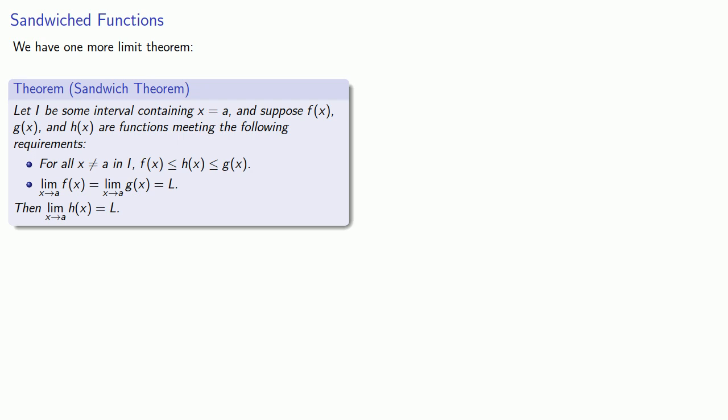Furthermore, suppose that the limit as x approaches a of f(x) is equal to the limit as x approaches a of g(x), and they're both equal to the same value L. Then, the sandwich theorem says that the limit as x approaches a of h(x) is going to be equal to L itself.